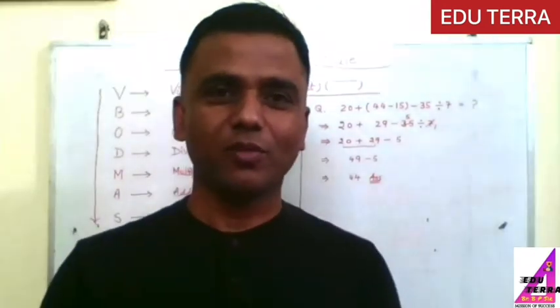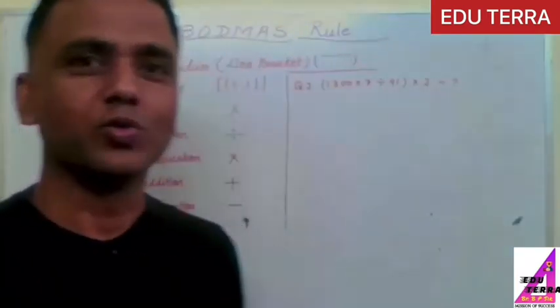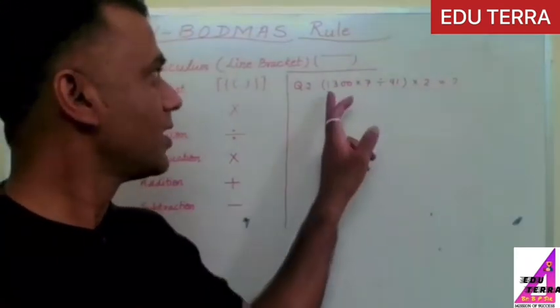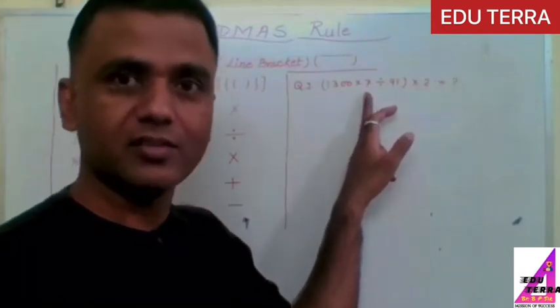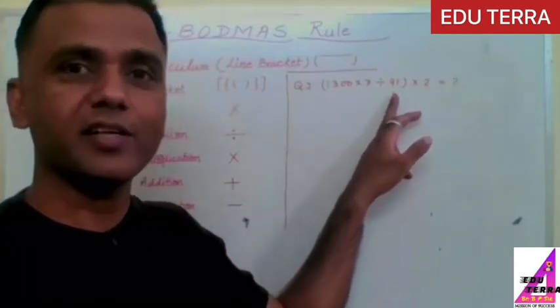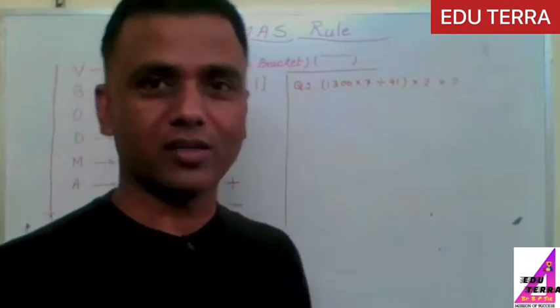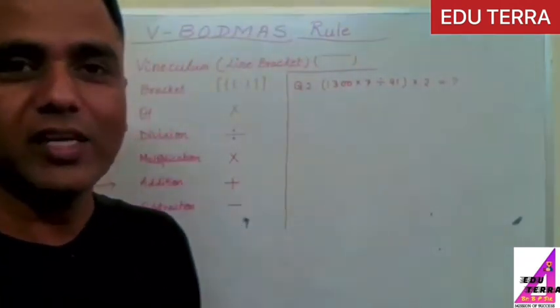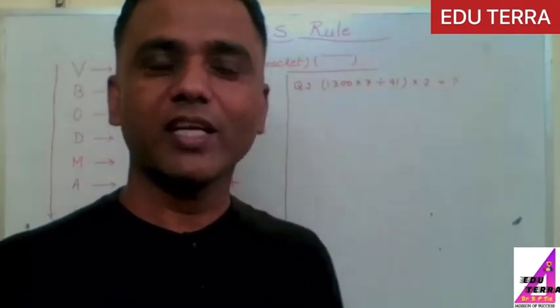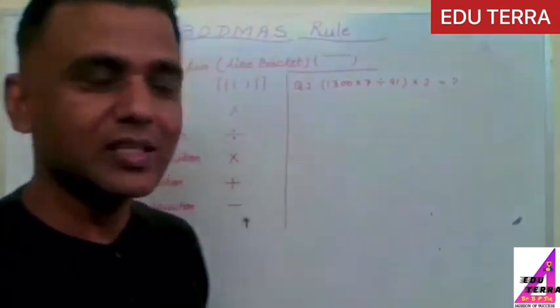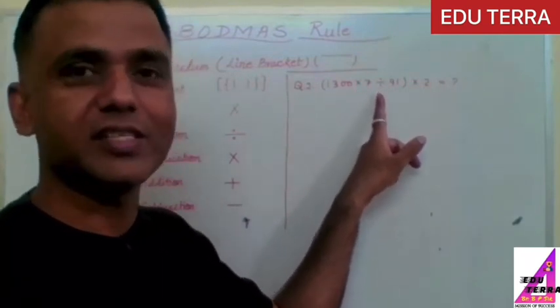Now I am going to take one more question for better understanding of the VBODMAS rule. The question is: in the bracket, 1300 into 7, division sign, then 91, bracket close, multiply by 2, equal to question mark.